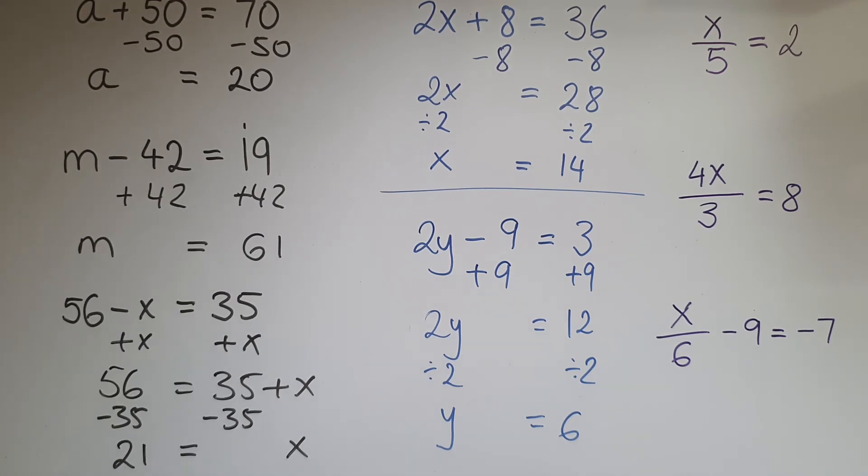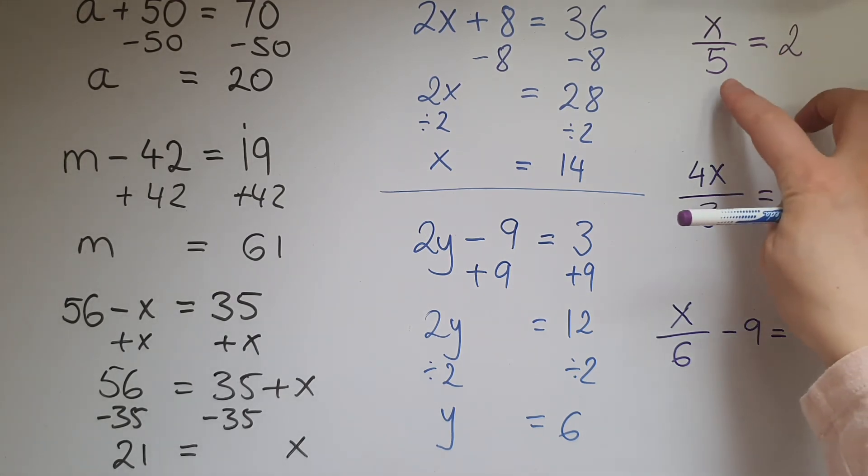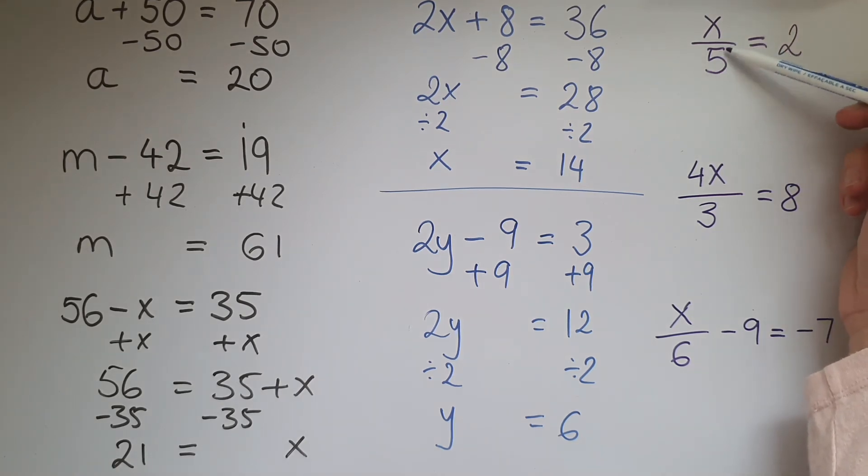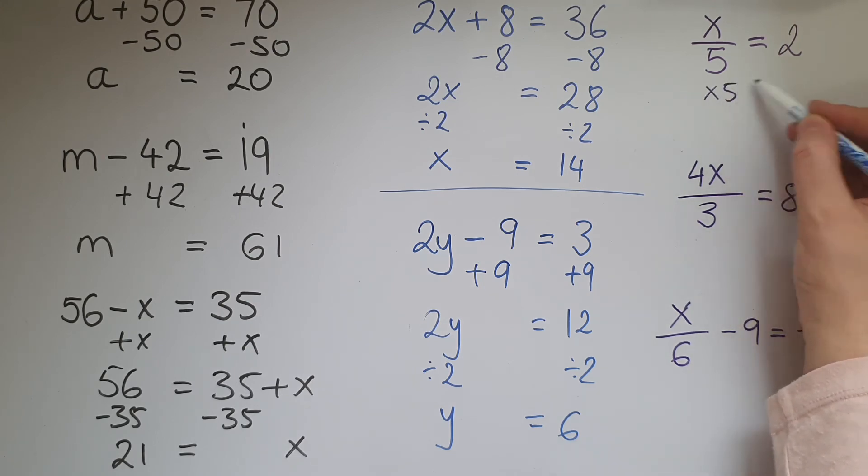Okay so we've got a few more examples. x divided by 5 equals 2. So what's that number which when we divide by 5 it gives us 2? You've probably worked it out in your head, but what we need to do since we are dividing x by 5, we're going to do the reverse which is multiplying by 5. So multiplying both sides by 5, x divided by 5 times 5 leaves us with x on its own, and 2 times 5 gives us 10. So x is equal to 10.